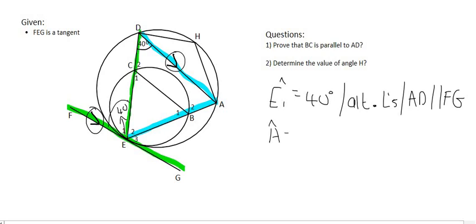Because of the tan-chord theorem, we can say that angle A is going to be equal to... well, technically, if you say A, it could also mean this angle. So we have to be more specific. Let's rather call it DAE, for example. That's going to be equal to 40 degrees as well because of the tan-chord theorem.